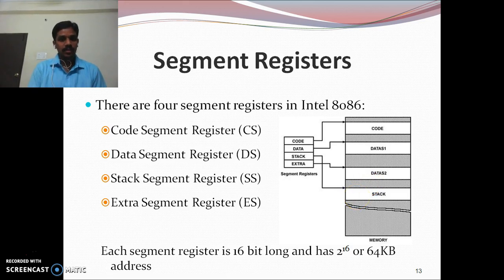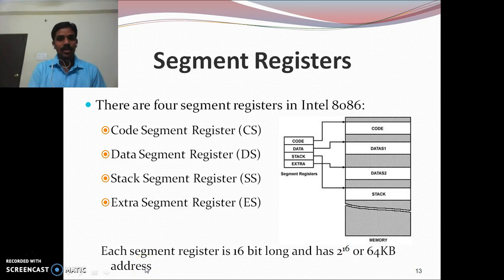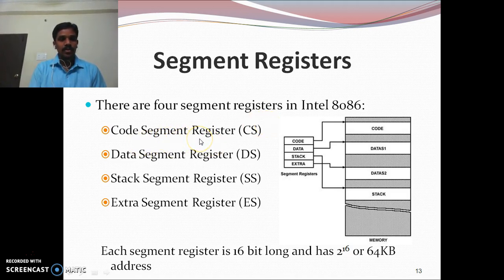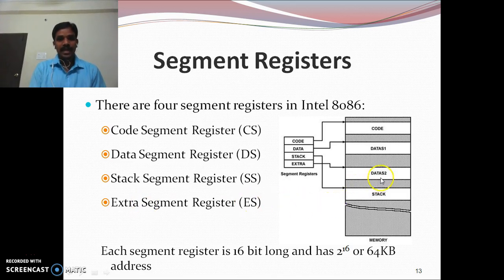There are four segment registers available. The total 1 megabyte of memory is divided into different segments. Each segment register is 16 bits long, so each segment can address 64 KB (2 to the power of 16). The four segments are: the code segment, data segment, stack segment, and extra segment. Each segment has its own specification. The code segment register stores the base address — the starting address — of the code segment. The data segment register stores the base address of the data segment. The stack segment register stores the base address of the stack, and the extra segment register stores the starting address of the extra segment.